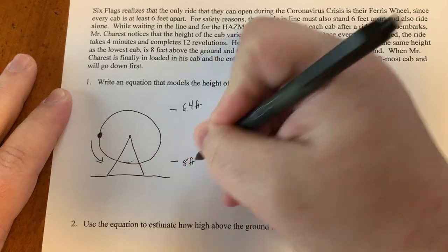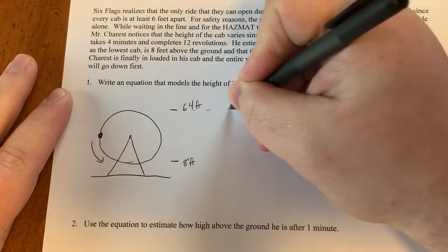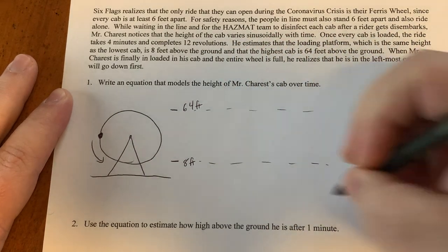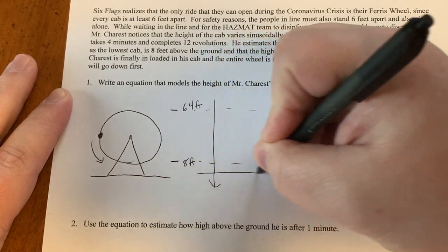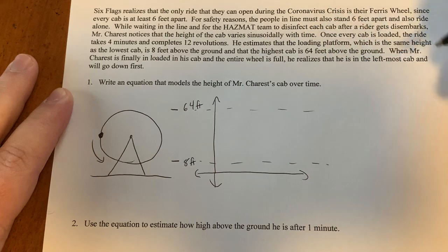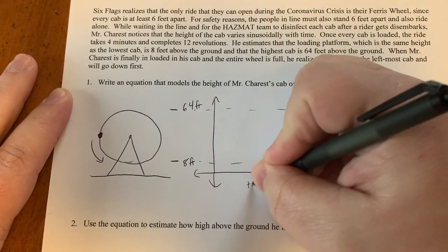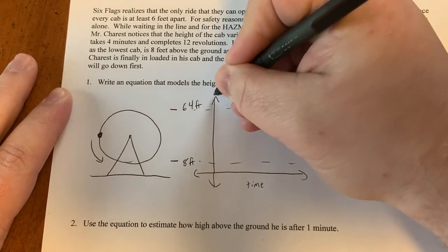We know the lowest cab is 8 feet above the ground. So that's 8 feet. So I'm just gonna extend that. Extend that. So I'm just making an x and a y-axis.